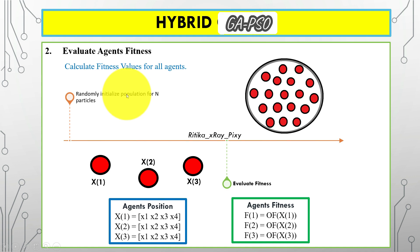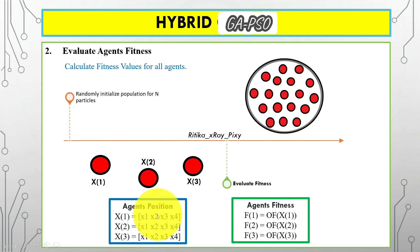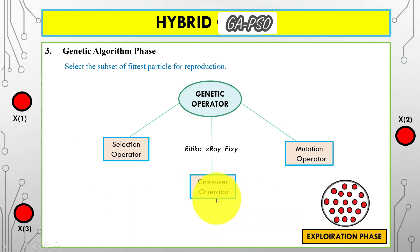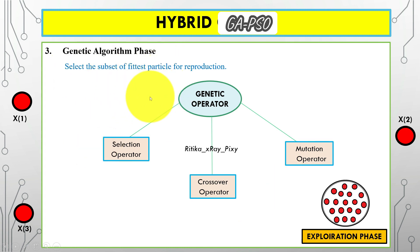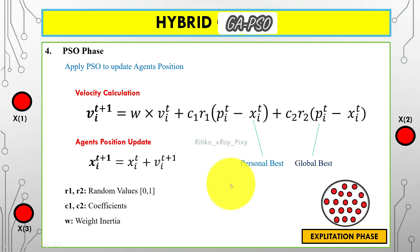Next, we calculate the fitness value for all agents by applying the objective function to each agent's position and evaluating their performance. Then we apply the genetic algorithm phase, where we perform exploration through selection, crossover, and mutation operators.